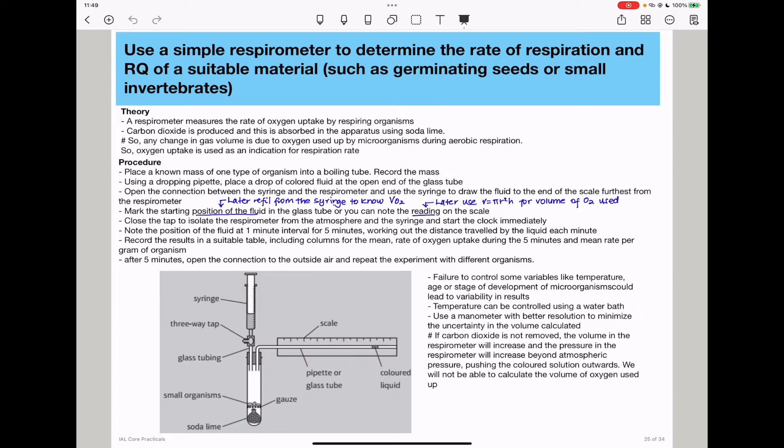We need to control variables. These include, since you're using organisms they have to be the same age, they have to be the same species, and they have to be at least at the same stage in development. You need to control temperature using a water bath. You need to use a manometer with better resolution to minimize the uncertainty in the volume calculated.